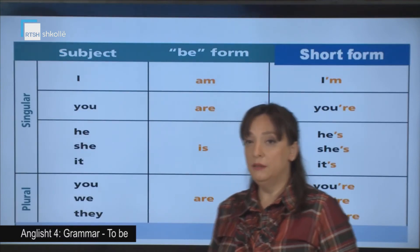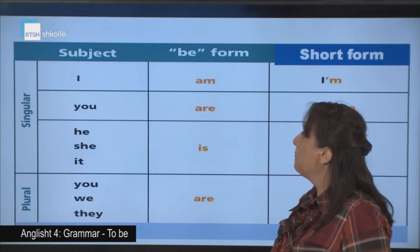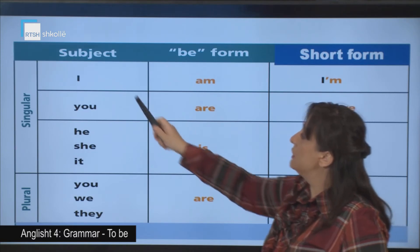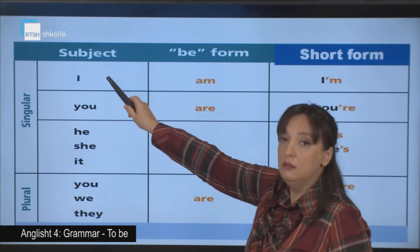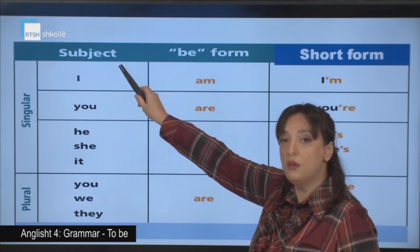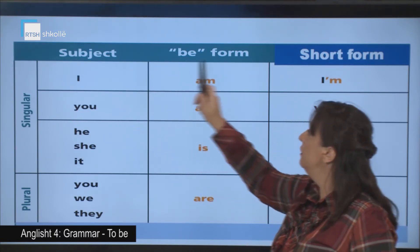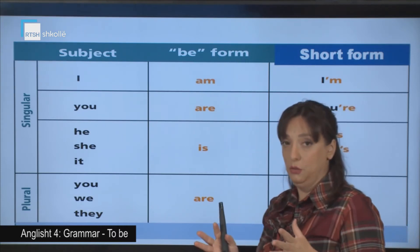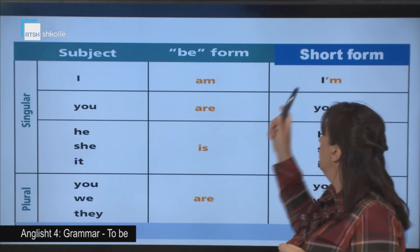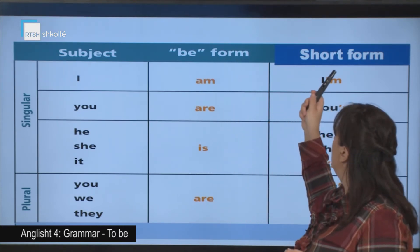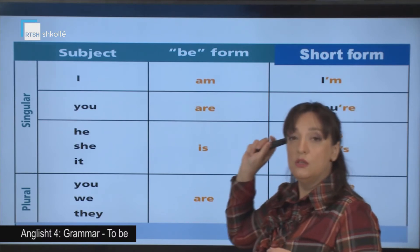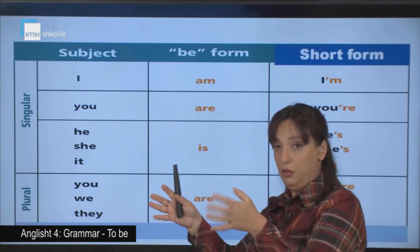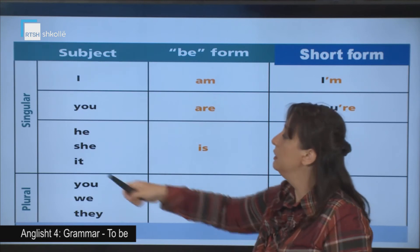To understand better, let's look at this table. What have we got in here? Subject — in Albanian it means 'kryefjala'. 'To be' form — the forms that the verb 'to be' takes. And short form. So we have the full form, the long form, and the short form.